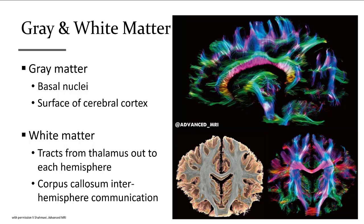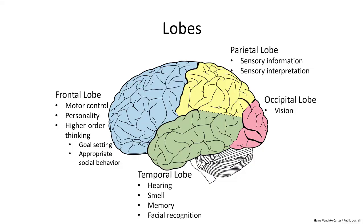The primary regions of white matter include the tracks extending from the thalamus to each hemisphere, as well as the corpus callosum that connects one hemisphere to the other side. There are five main lobes of the brain. The frontal lobe is the most anterior portion and is the main source of motor impulses and higher order thinking, such as goal planning and understanding consequences. Posterior to that is the parietal lobe, which processes sensory information consciously.